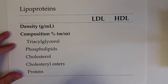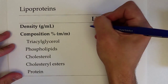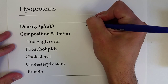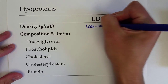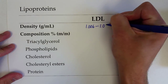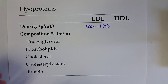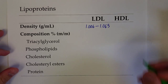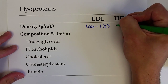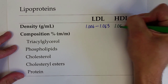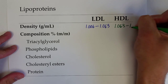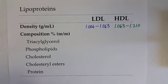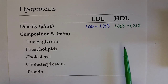The density of low density lipoproteins ranges from 1.006 to 1.063 grams per milliliter, and of course that means the high density lipoproteins have a little bit higher density, starting at 1.063 and going up to 1.210 grams per milliliter. The reasons they have different densities are primarily their different compositions.